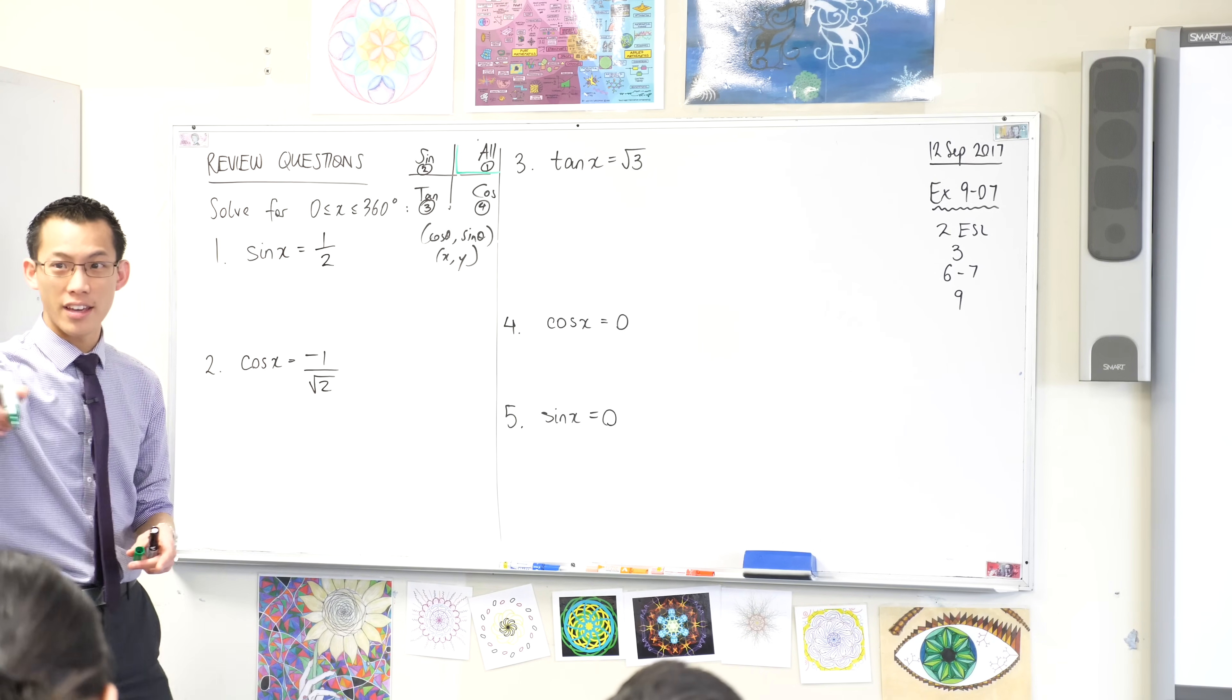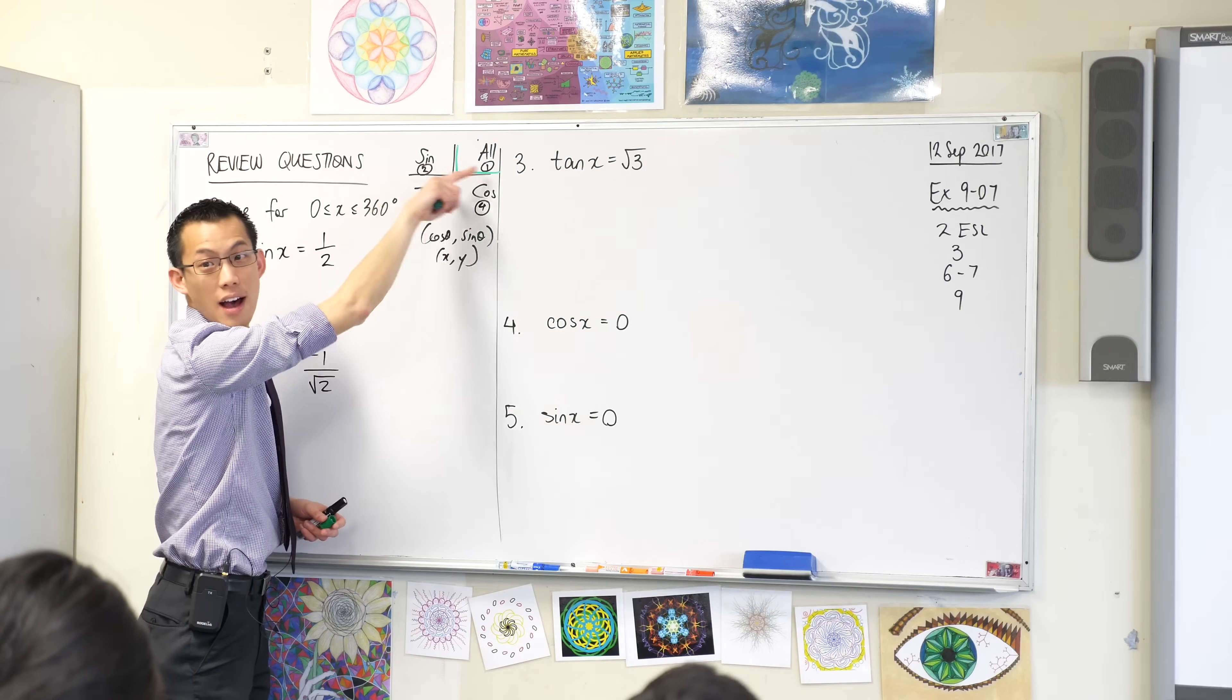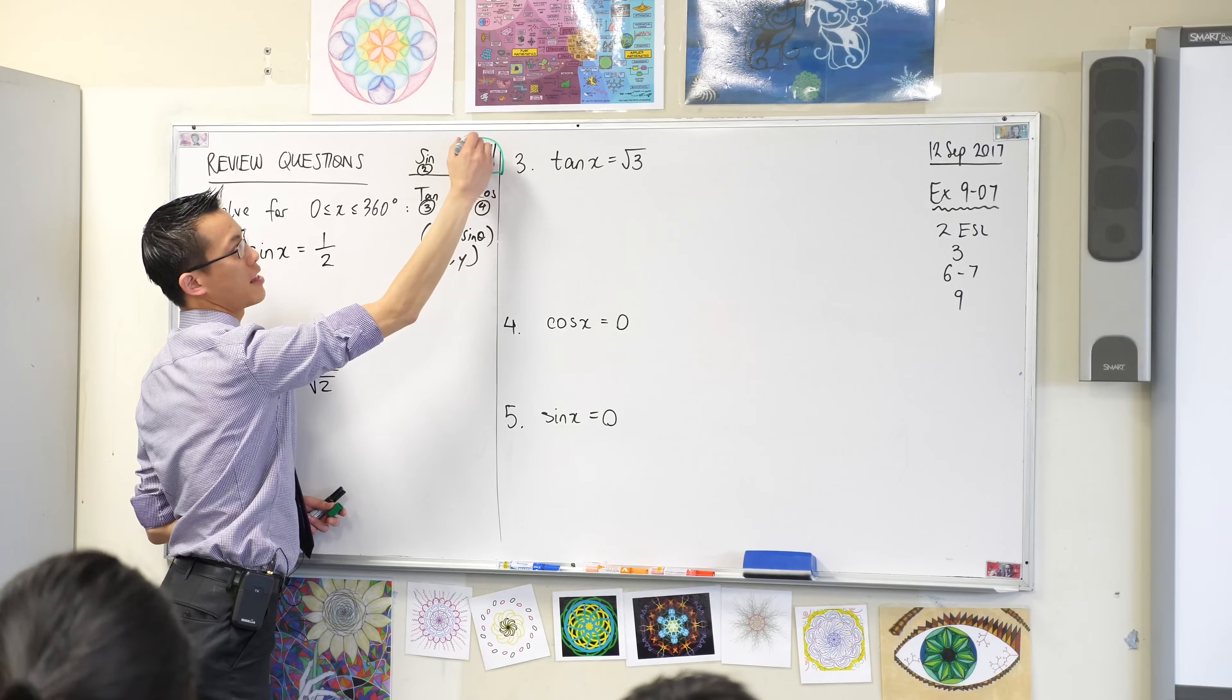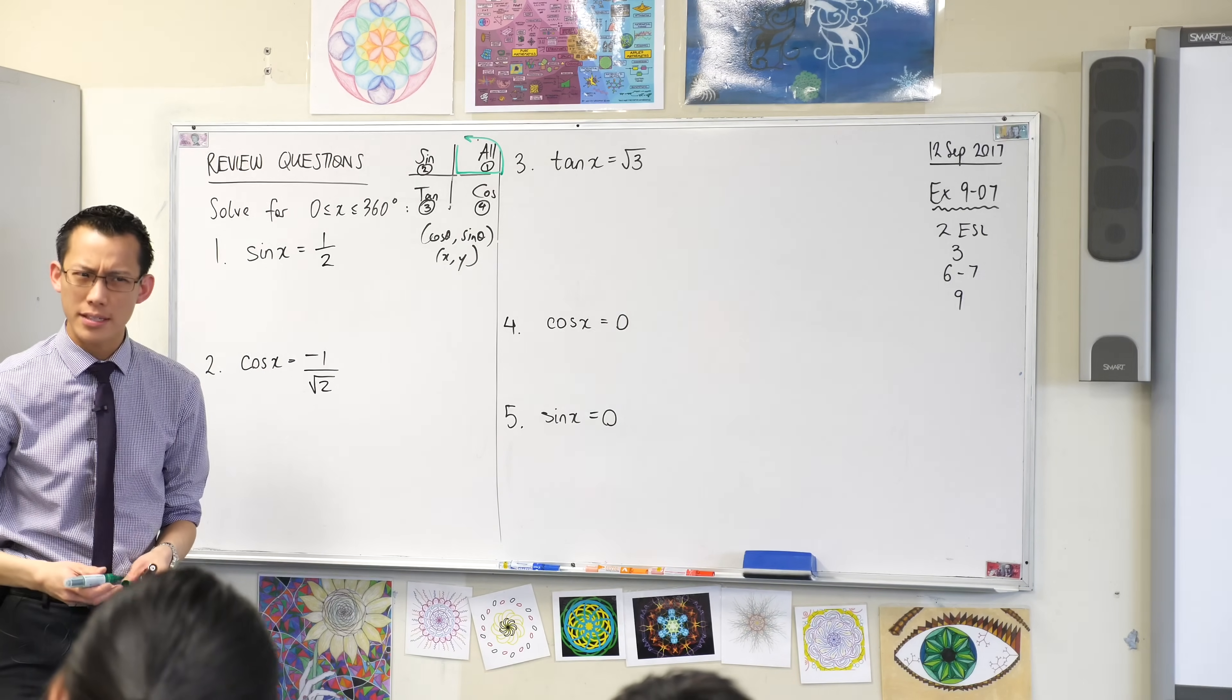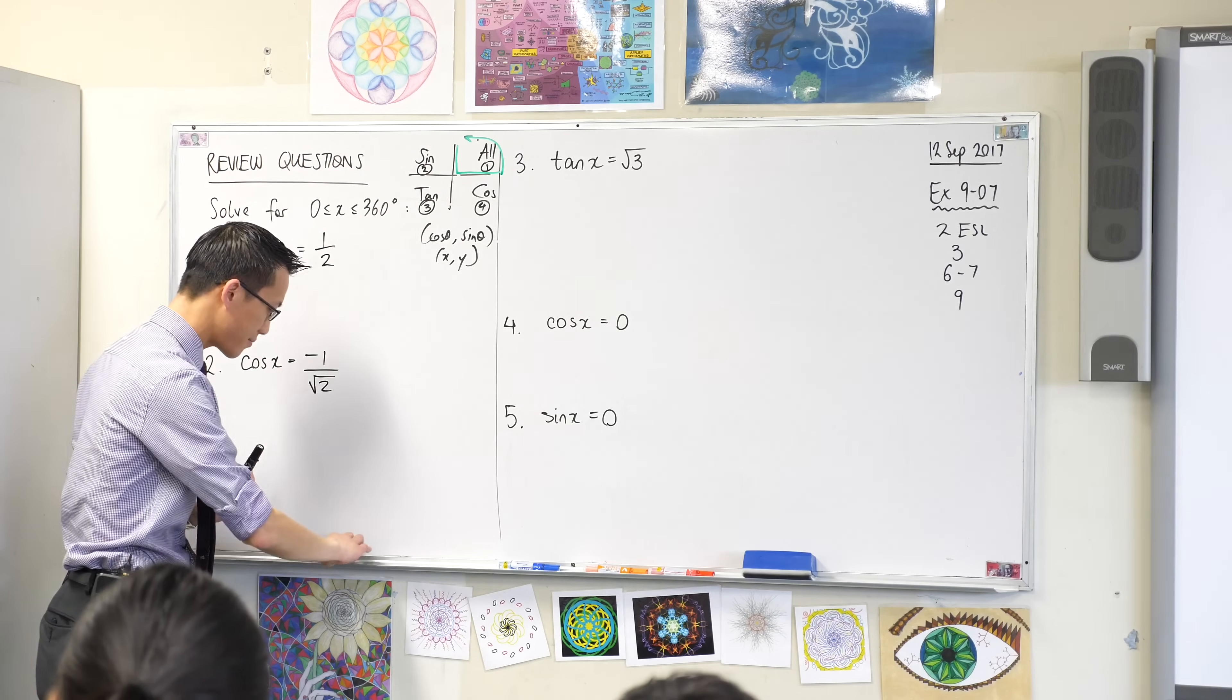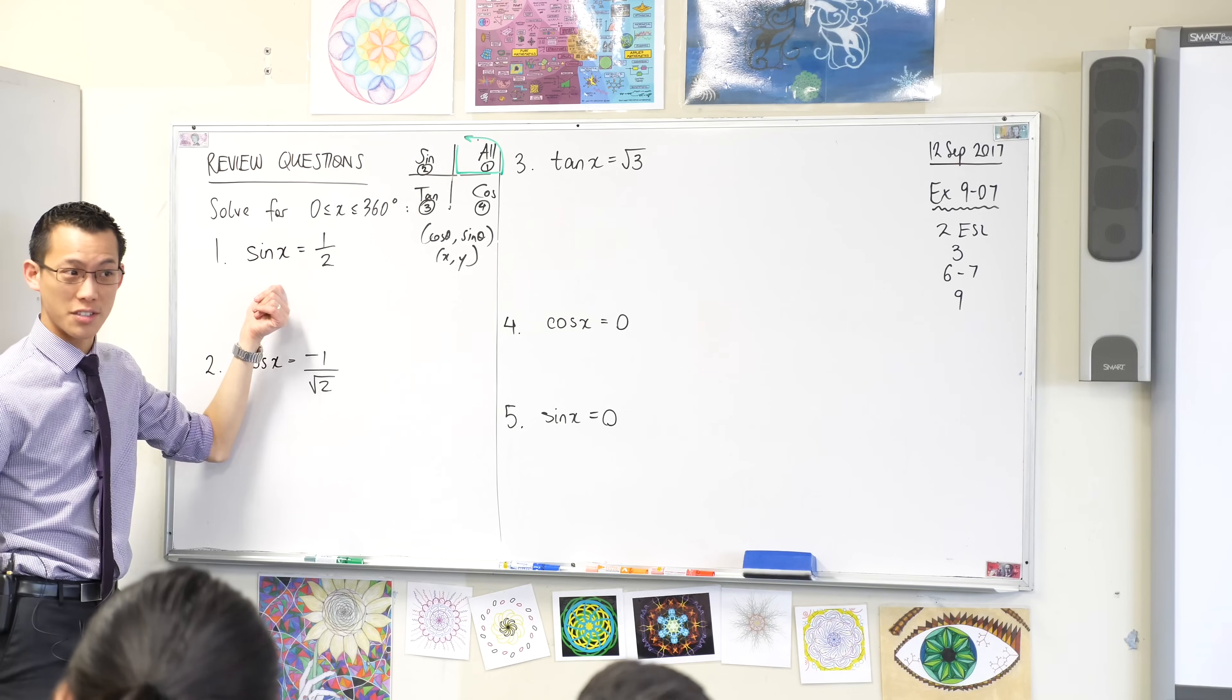We start on the, I heard it, from the origin we look at the positive side, right, of the x-axis. Do you remember that? And then we measure upwards and then the unit circle sort of goes around. Does that make sense? So that's our starting point, that's why that's one and two and three and four, okay? So now we can use this scheme to help us answer these questions, okay?